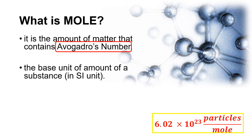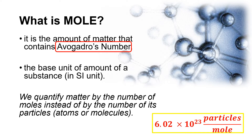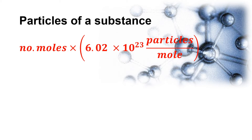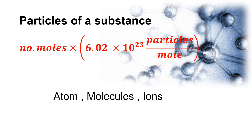One of the importances of determining the number of moles of a substance is that we quantify matter by the number of moles instead of by the number of its particles, either by atoms or molecules. When we talk about particles of a substance, it could either be in terms of atoms for an element, molecules for a compound, or ions for charged elements. To get the number of particles, we must first determine the number of moles and then multiply it by Avogadro's number to determine the exact number of particles of a substance — either atoms for an element, molecules for a compound, or ions for charged elements.